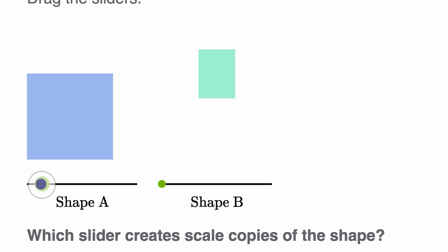All right, let's look at shape A. Okay, so this does look like we're scaling down, but we're scaling both the width and the height by the same factor. So this shape A slider does look like it's creating scaled copies of the shape.